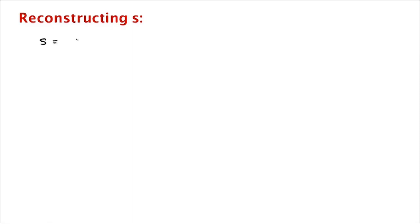Let's try to understand how to reconstruct s. Going back to our example from before where we were working over three qubits, our s was 101. Remember what we get as a result of the Fourier sampling is a random y such that y·s is 0.